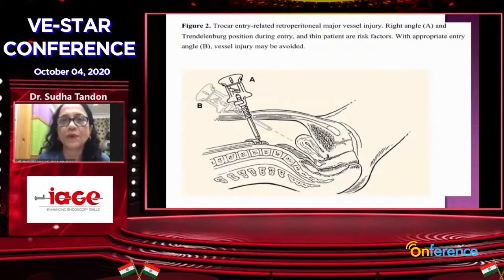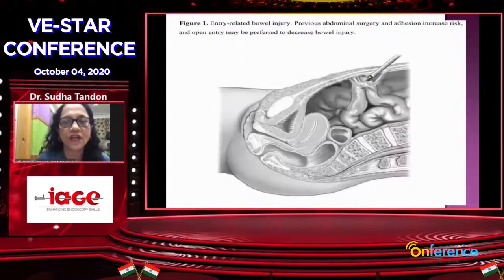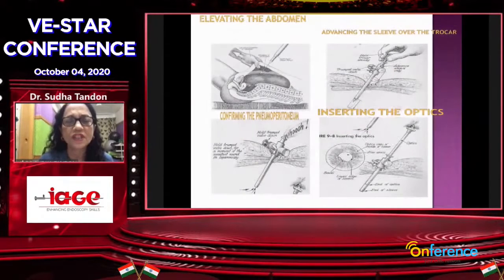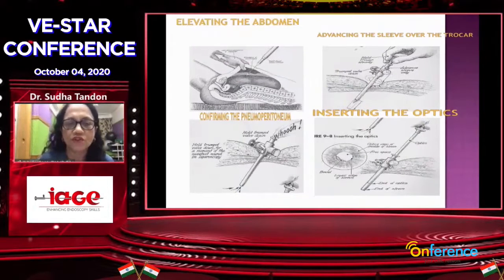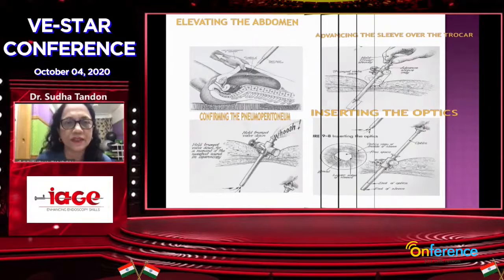For trocar entry-related retroperitoneal vessel injury, you must put the trocar in a proper way. During entry in a thin patient, direct it towards the pelvis; in an obese patient, you can go absolutely 90 degrees to avoid any injury. You confirm the pneumoperitoneum by elevating the abdomen, then advance just the sleeve over the trocar — do not advance the trocar itself. You confirm the pneumoperitoneum because your valves are all open and you will get a gush of CO2 coming out. Then put your optics and at every level check whether you have injured anything. Right at the primary entry when you put your telescope, you must check whether you have damaged any vessel, omentum, or bowel.